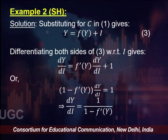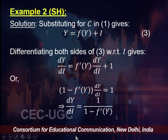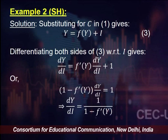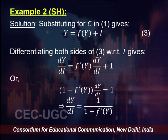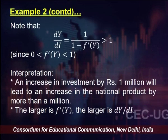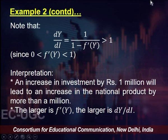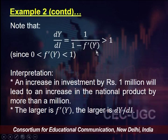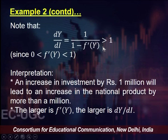Collecting the terms containing dy/di I will get 1 minus f prime of y times dy/di equal to 1, so that dy/di is equal to 1 divided by 1 minus f prime of y — that is, 1 divided by 1 minus the MPC. Because f prime of y is between 0 and 1, the denominator is also between 0 and 1, which means dy/di is going to be greater than 1.